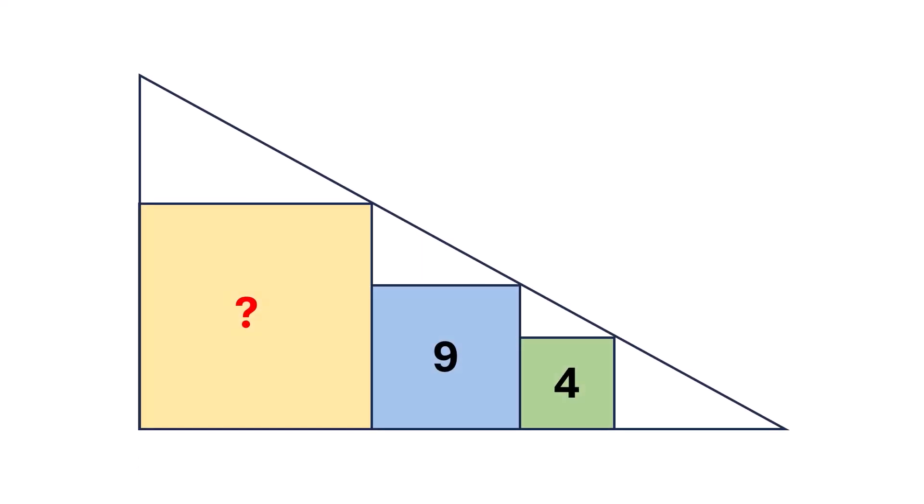Hello, everyone. In today's video, we're going to explore an interesting geometry puzzle. We're given a large right-angled triangle. Inside this triangle, three squares are perfectly nestled side by side, each touching the triangle's base and hypotenuse.